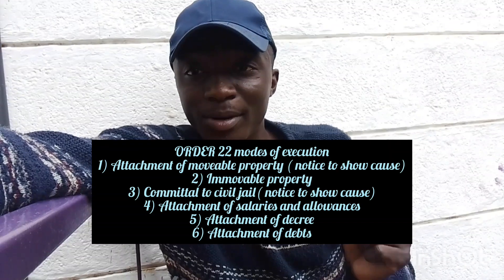The modes of execution include: attachment of movable property — under this there must be a notice to show cause meaning the defendant must be present — attachment of movable property, attachment of debts, and committal to civil jail — under this one there must also be a notice to show cause so that the defendant must be present. So the modes of execution are: attachment of movable property, attachment of debts, attachment execution for decrees, and committal to civil jail.